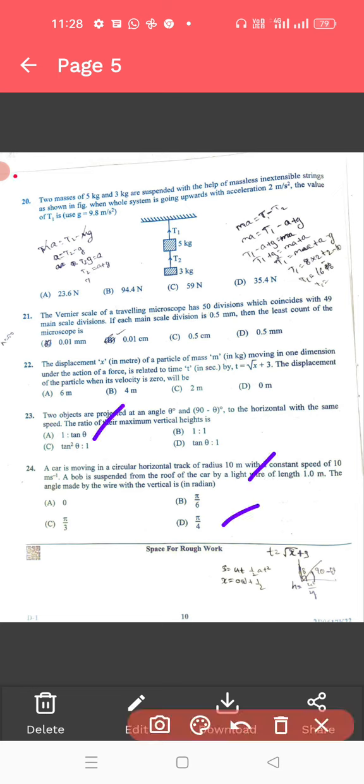Okay, so let us see the next question, 20th question. For the 20th question, 2 masses of 5 kg. For this, the correct answer is 94.4 newton.